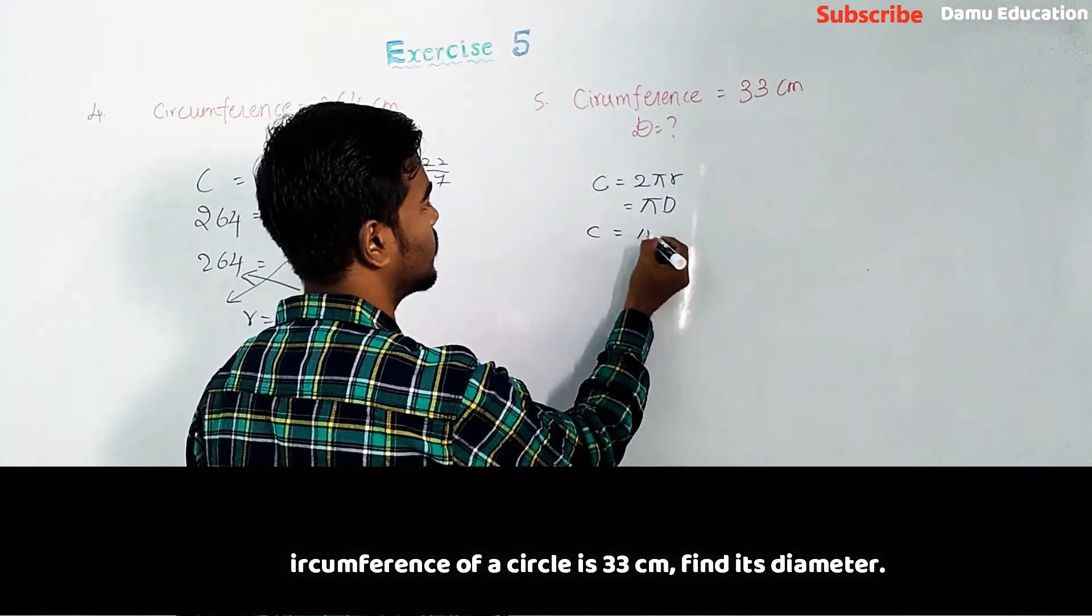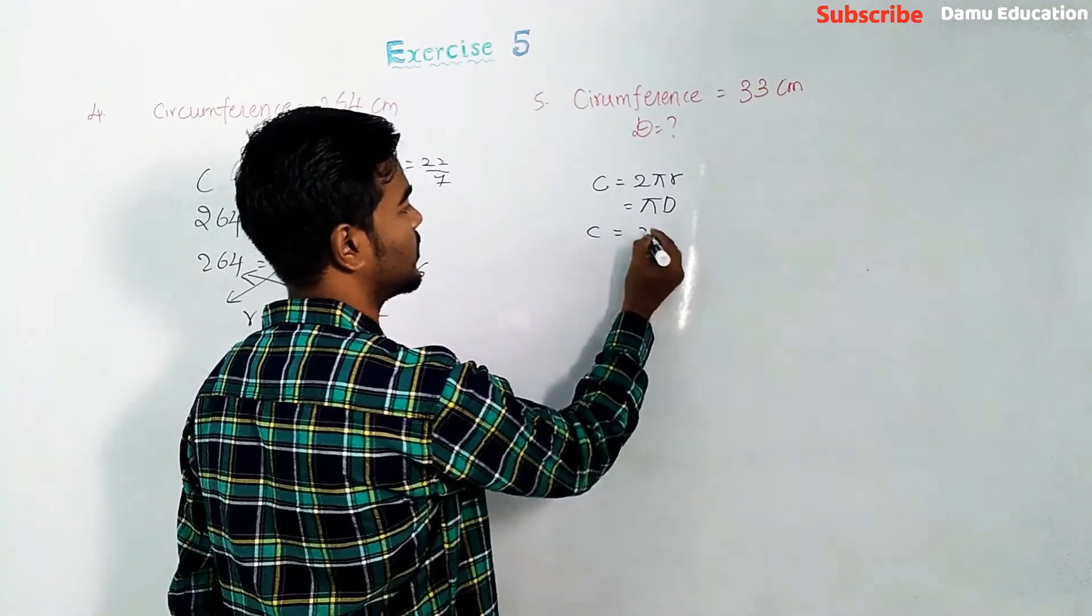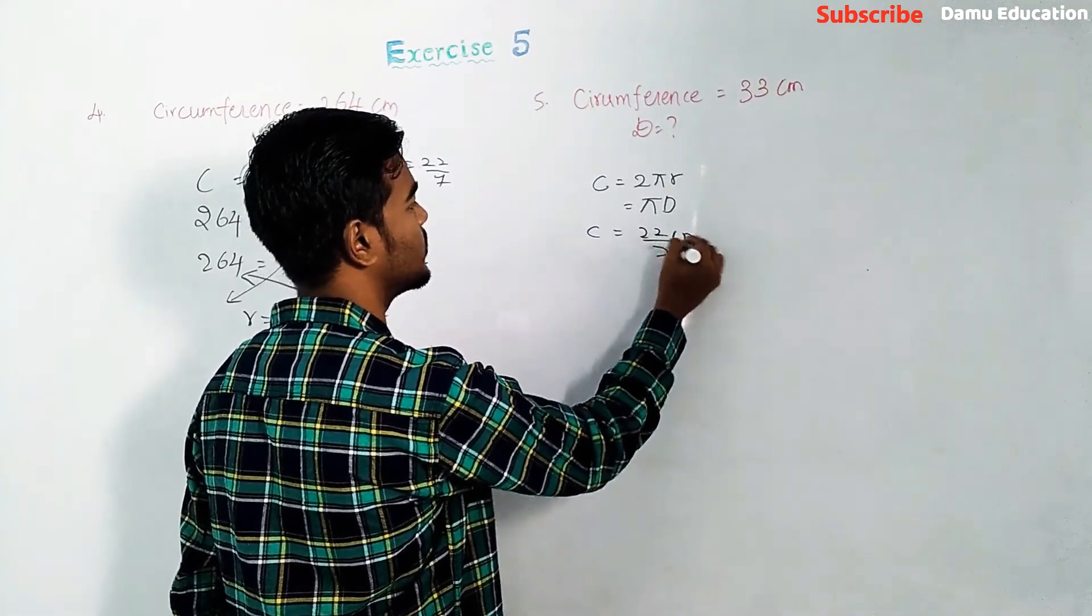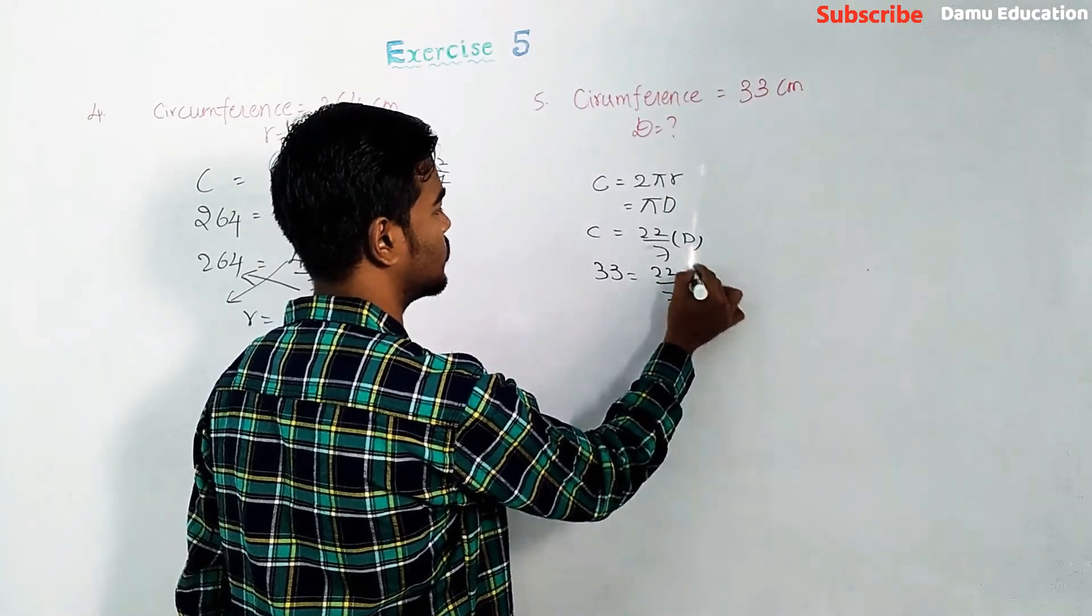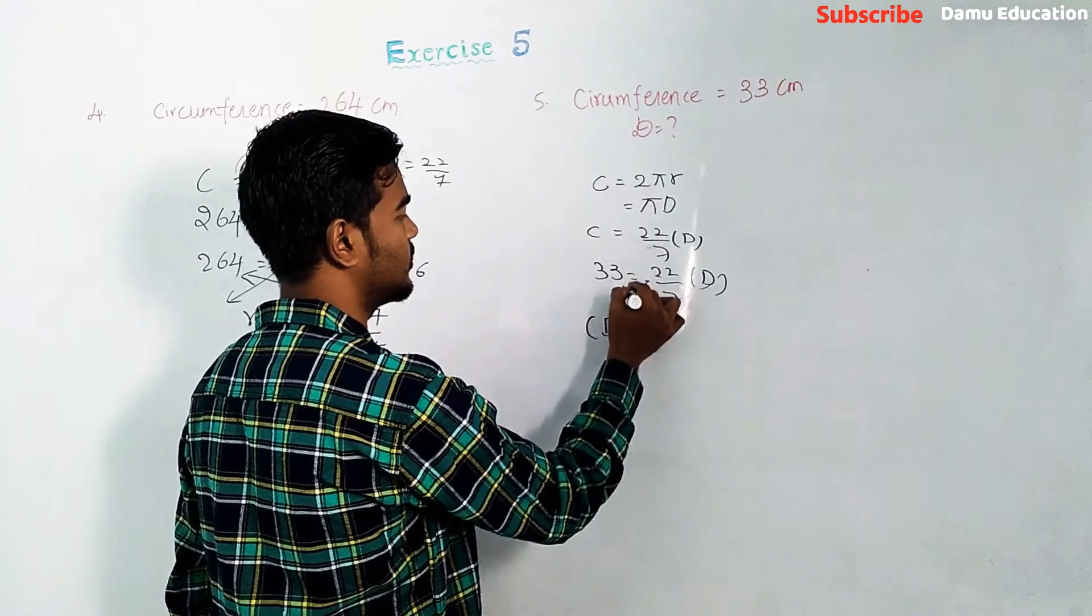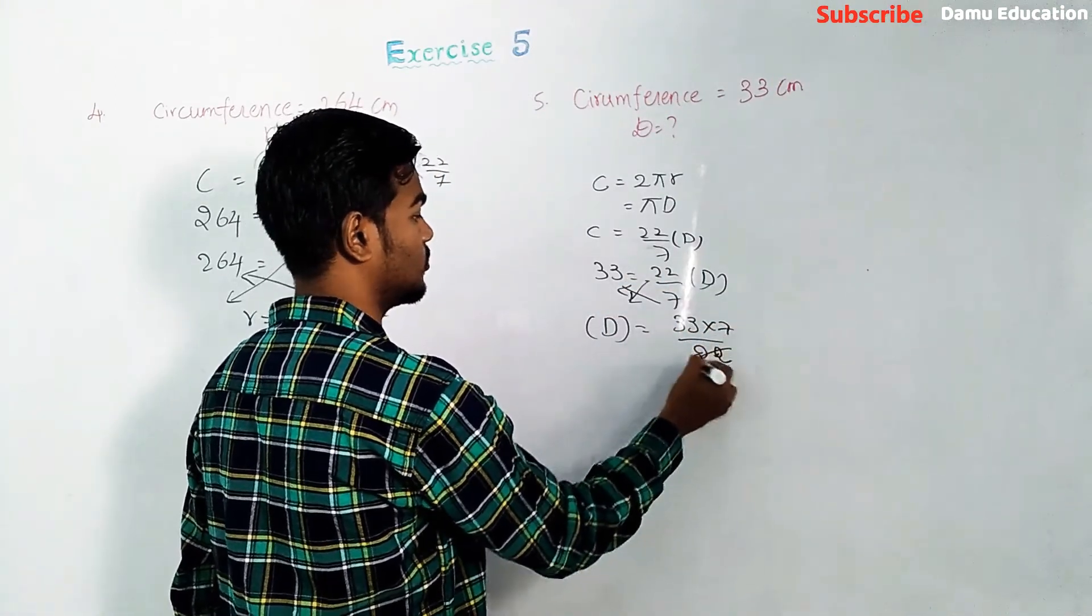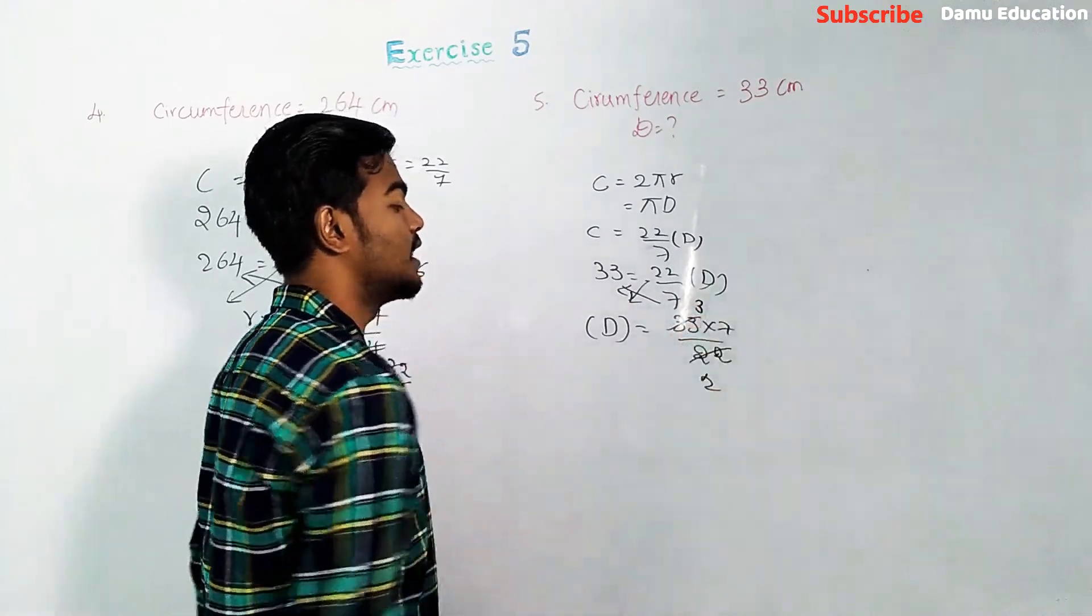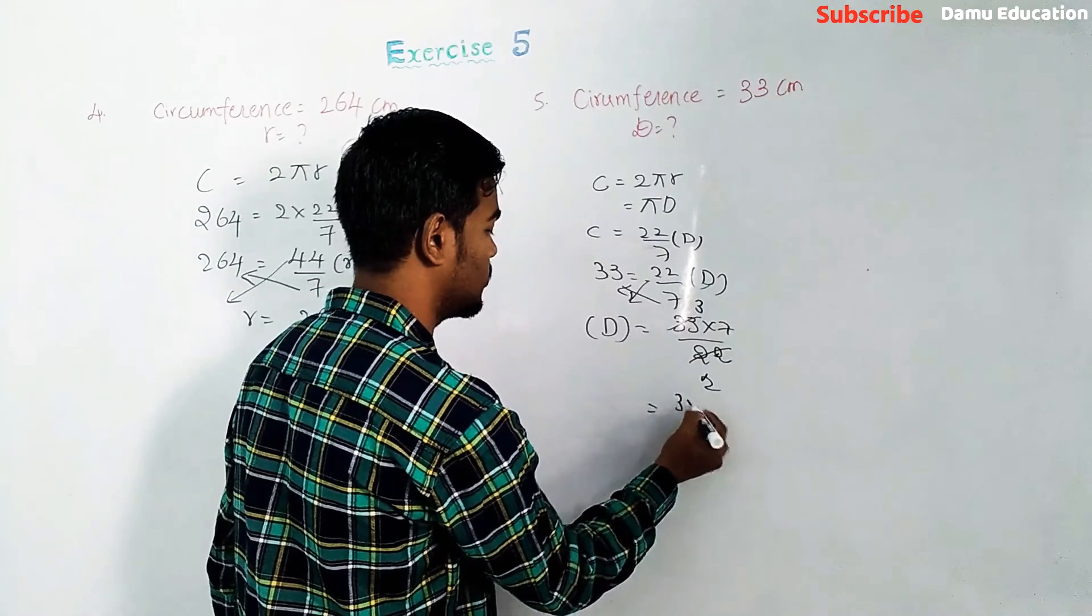Then c equals πd, that is 22 by 7 into diameter. 33 will be 22 by 7 into diameter. So diameter equals 33 by 7 by 22.